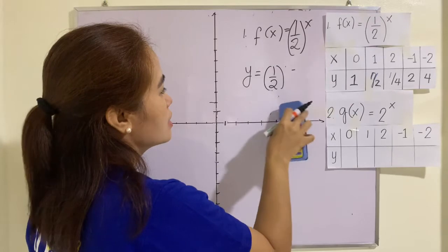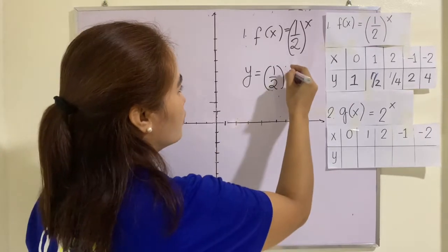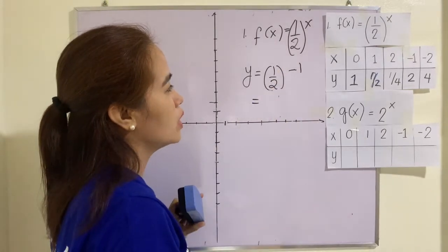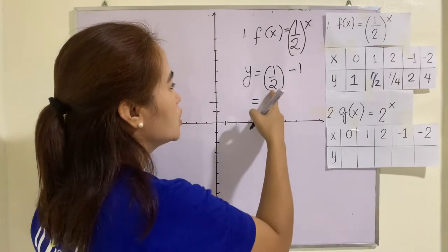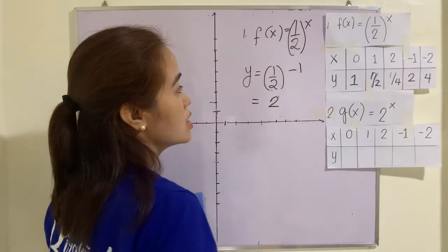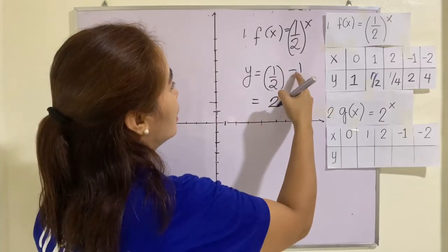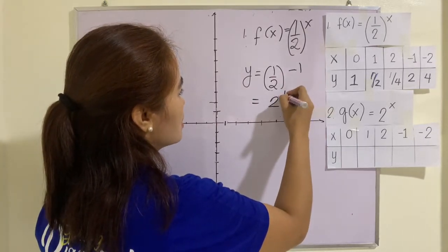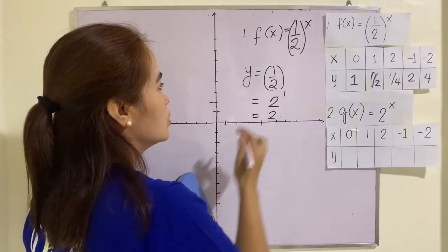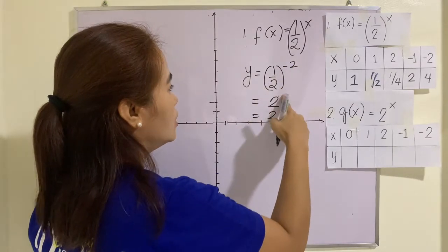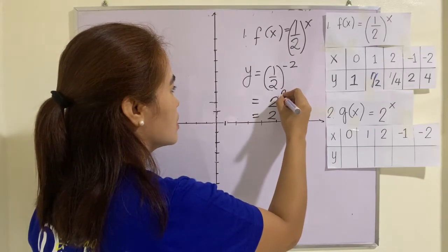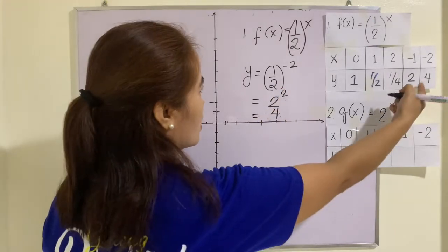What about if x is equal to negative 1? One of the laws of exponents states that when the exponent is negative, you get the reciprocal of the base. The reciprocal of 1/2 is 2, and then make the exponent positive. So this equals 2. What about negative 2? Again, you get the reciprocal — it's 2 — and make the exponent positive, so it's 2 squared, which equals 4.